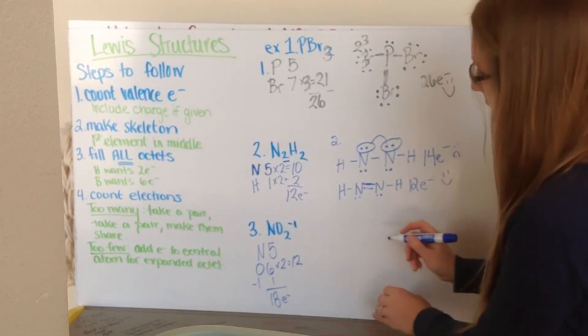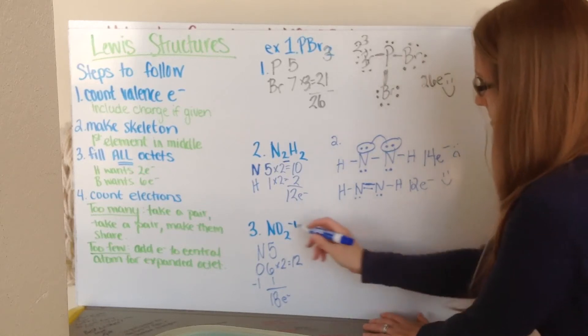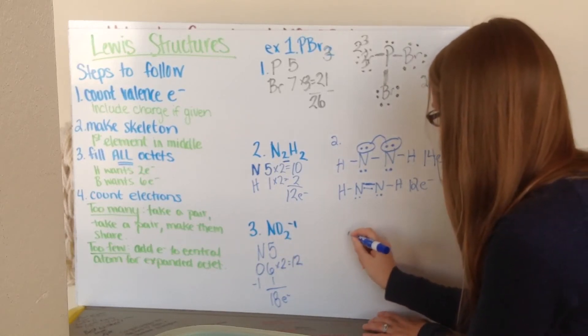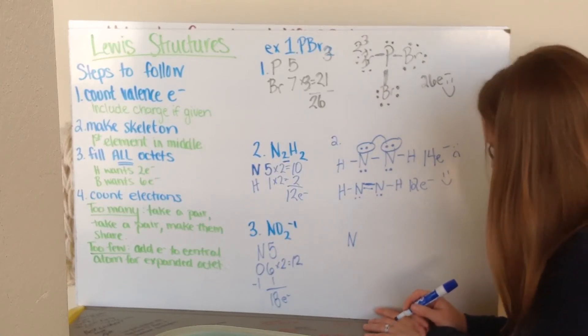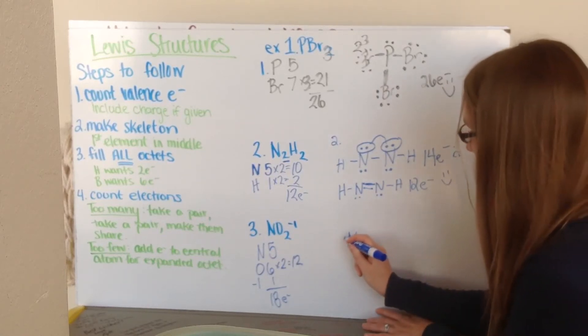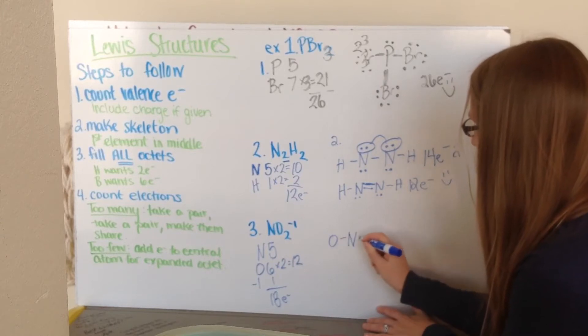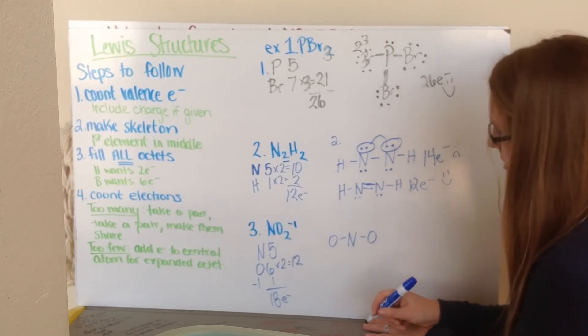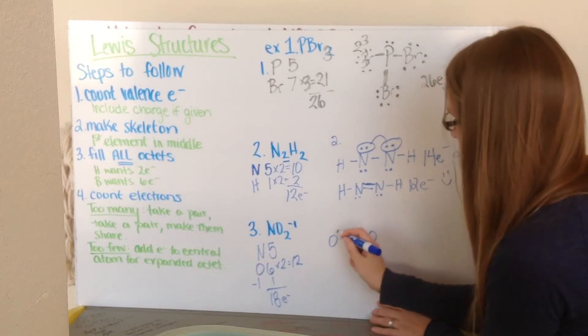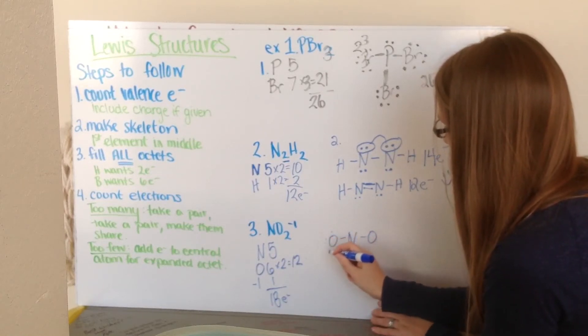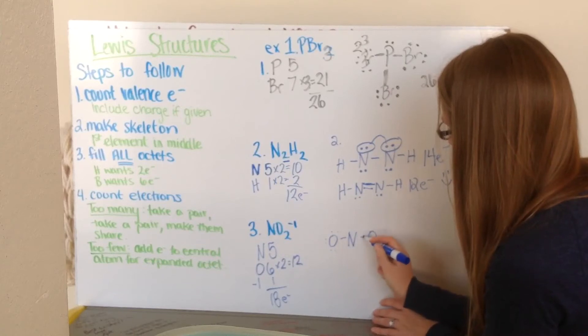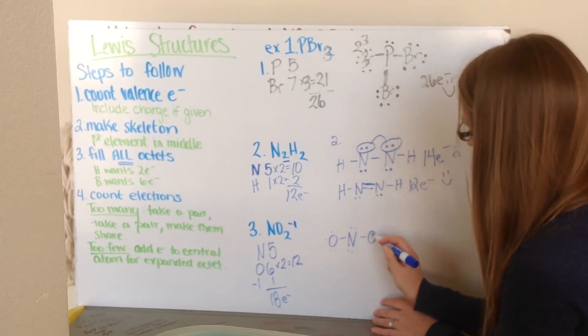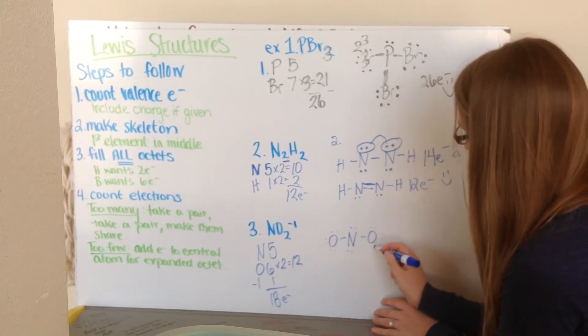Next up, I go ahead and I make my skeleton. I put my first element in the middle, so my nitrogen goes in the middle. And then I go ahead and I put my oxygens around it. So I put one on either side, so it's balanced. After I made my skeleton, I fill my octets. 1, 2, 3, 4, 5, 6, 7, 8. And oxygen is 1, 2, 3, 4, 5, 6, 7, 8. And oxygen is 1, 2, 3, 4, 5, 6, 7, 8. So everybody's octets are full.